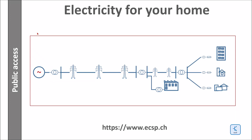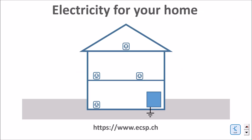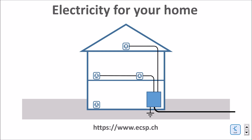Hello everybody! Let's talk about how electricity is provided to your homes. Your house is grounded by an earth rod. An electric cable is connected to a cabinet, and from there, wires are distributed to all the sockets and lamps in your house.